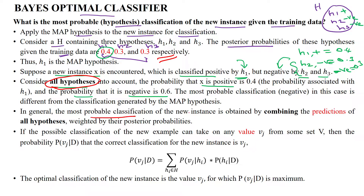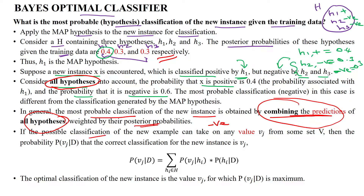In general, the most probable classification of a given new test data is obtained by combining the predictions of all hypotheses weighted by their posterior probabilities. This data will be classified as negative based upon combining all hypothesis predictions. If the possible classification of new test data can take on any value Vj from the set of values V, then we can write the probability of Vj given data D as the correct classification for the new test data X.